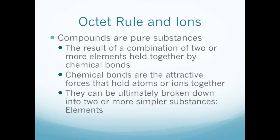We're going to need to discuss something called the octet rule when we talk about ions, because the way ions form is directly related to the number of electrons present in the atom. Compounds are any pure substance that results from the combination of two or more elements held together by chemical bonds. Up to this point we've really only talked about elements and atoms, but now we're going to outline exactly what makes a molecule a molecule.